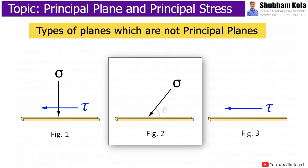In second type of plane, there is stress sigma, which is inclined to plane at an angle theta. But the planes on which normal stresses act are called principal planes. Therefore, second type of plane is not principal plane.